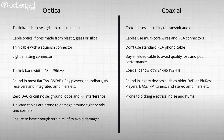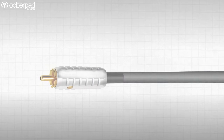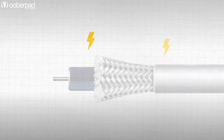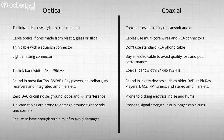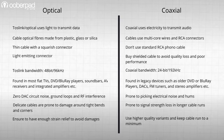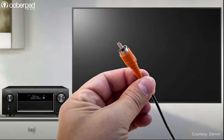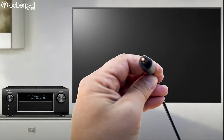As a coaxial cable transmits signal using electricity through metal-based wires and connectors, it is more prone to picking up electrical noise and hums through the signal path. Signal strength also decreases especially in longer cable runs, so ensure you use higher quality branded variants and keep the cable run to a minimum.